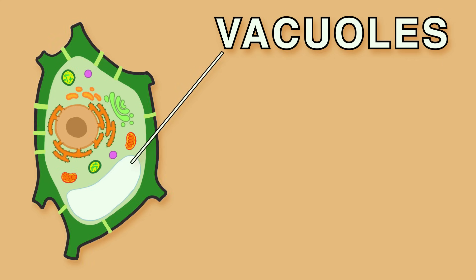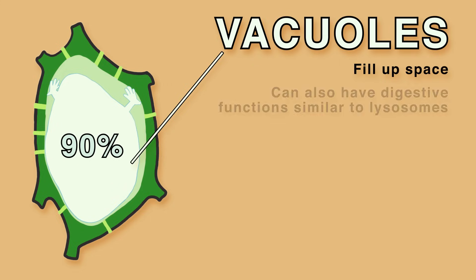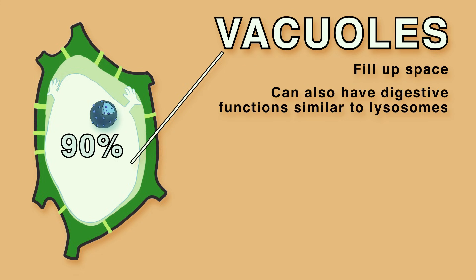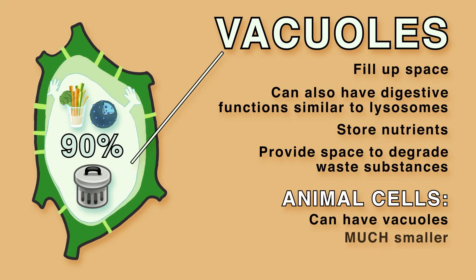Another important difference between plant and animal cells is in their vacuoles. Vacuoles in plant cells can occupy up to 90% of the cell's volume and have a single membrane. One of their roles is simply to fill up space, but they can also have digestive functions similar to lysosomes. Vacuoles have enzymes that perform many functions and can store nutrients or provide space to degrade waste substances. Animal cells can also have vacuoles, but they are much smaller than the large central vacuole in plant cells, there are multiple of them, and they don't take up 90% of the space.